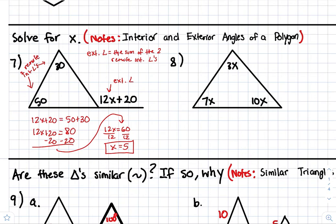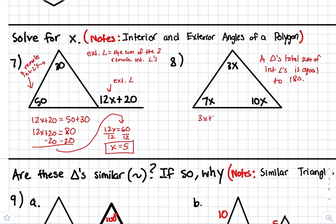For number 8, remember a triangle's total sum of interior angles is equal to 180. So basically, the sum of all these interior angles — 3x plus 7x plus 10x — is equal to 180. Just solve: you get 20x equals 180. Divide both sides by 20, and x equals 9.